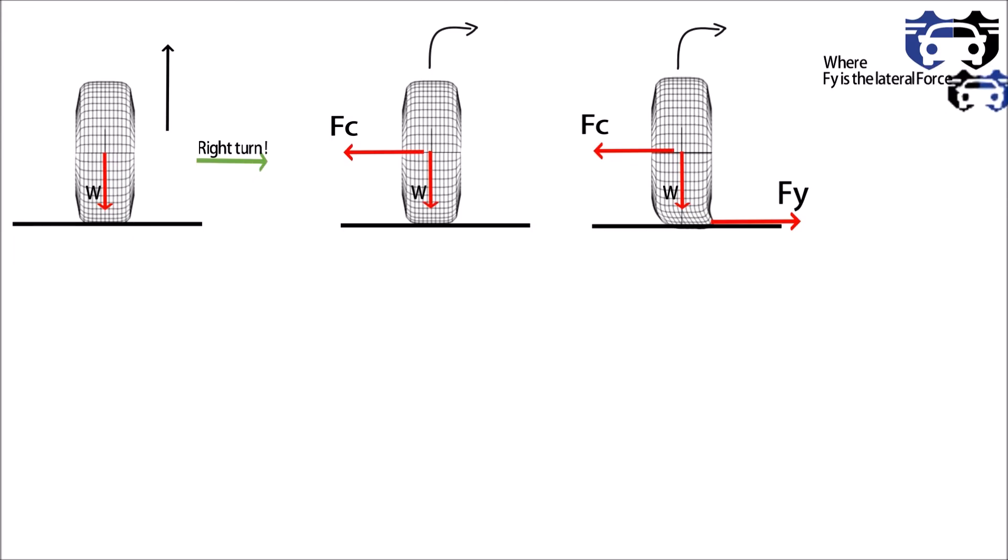Given by Fy equals to μy multiplied by W, where μy is the lateral coefficient of friction in y direction. When the centrifugal force Fc is greater than the lateral force Fy, the tire will skid.